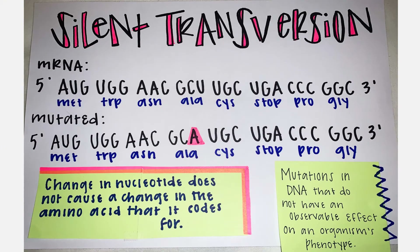Silent mutations are mutations that do not have an observable effect on an organism's phenotype. In this example, the uracil nucleotide in alanine is changed to an adenine nucleotide. Although this creates a different codon, it will still code for the same amino acid. This mutation is a transversion because pyrimidine uracil is exchanged for purine adenine.